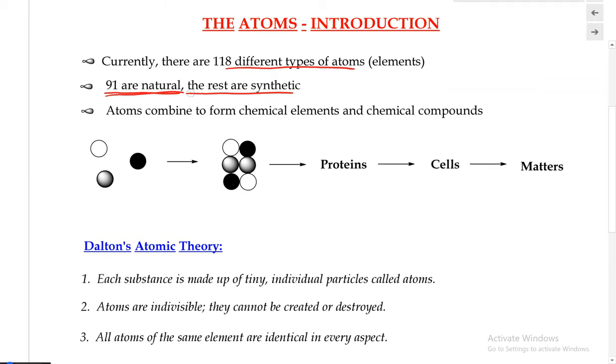And these 91 natural elements combine together to form chemical elements and chemical compounds and basically make up everything around us.